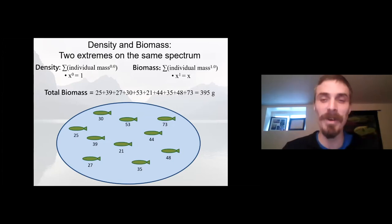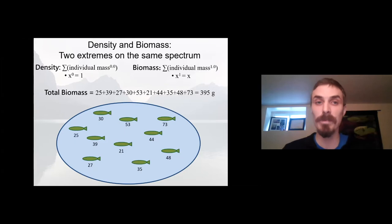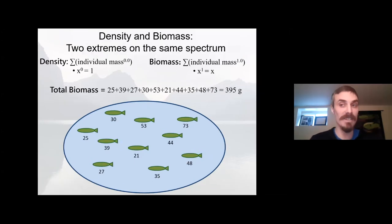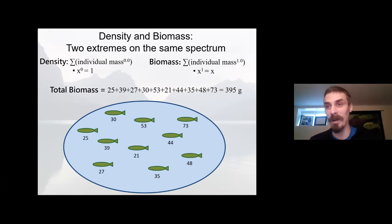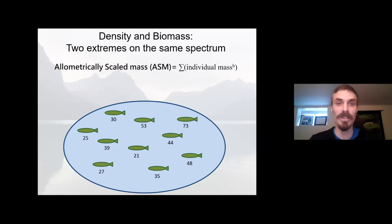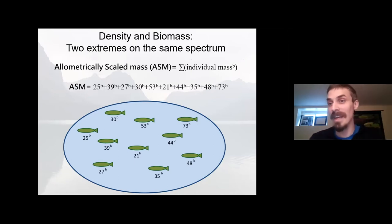What we're really doing when we express density and biomass using this mathematical formula is expressing them as a function of individual mass raised to the power of a scaling coefficient. It just so happens that zero and one — density and biomass — correspond to special cases of the scaling coefficient value, with density corresponding to a scaling coefficient of zero and biomass corresponding to a scaling coefficient of one. To integrate allometry into eDNA production, all we have to do is take individual mass values, raise them to the power of our eDNA production scaling coefficient, and sum the resulting totals. This gives us what we refer to as our allometrically scaled mass.